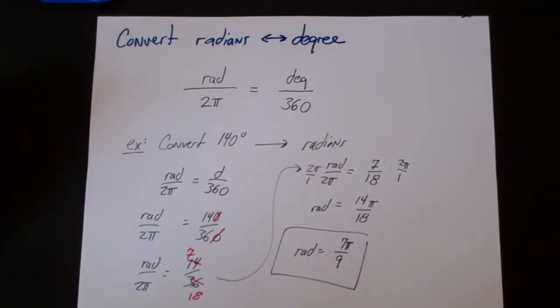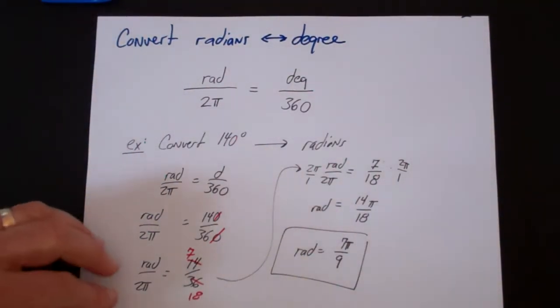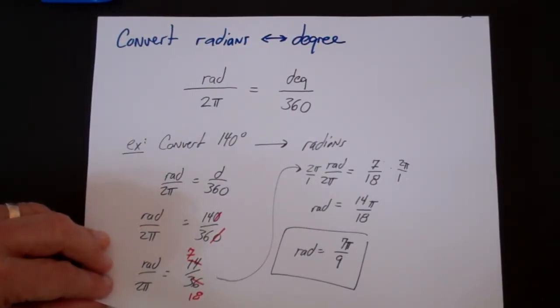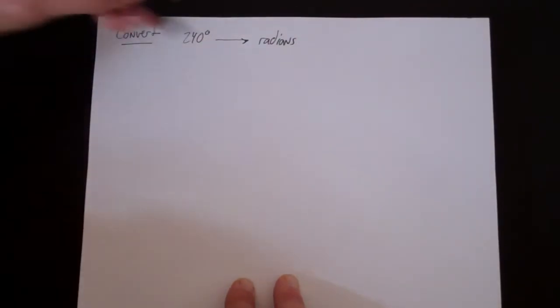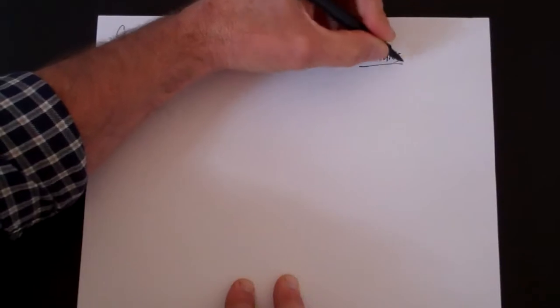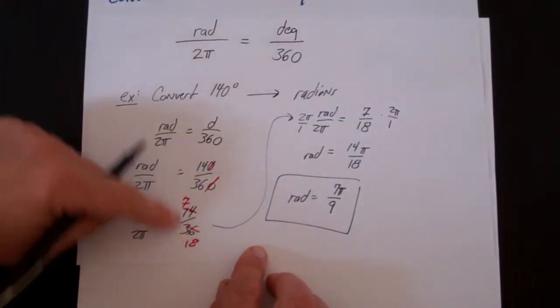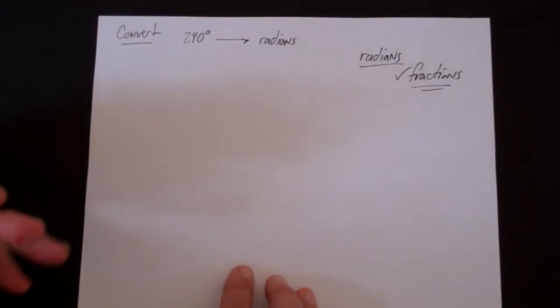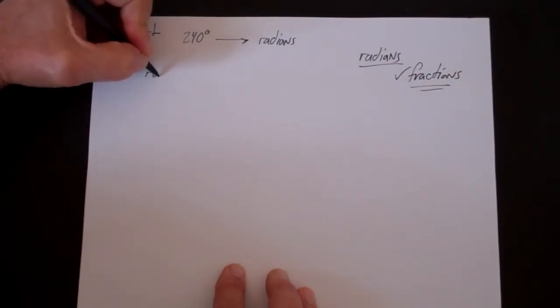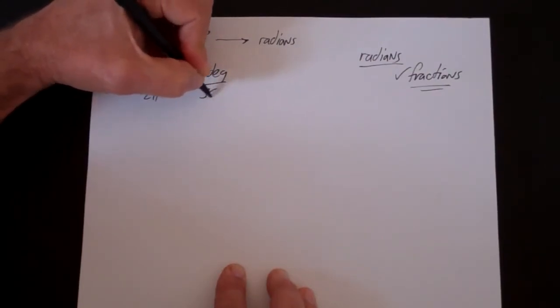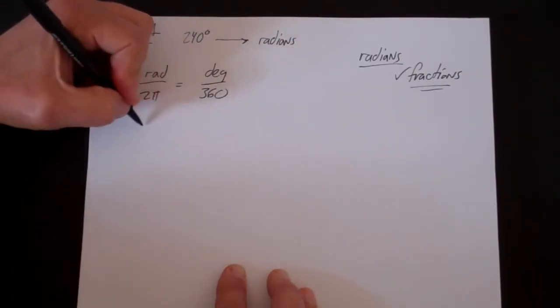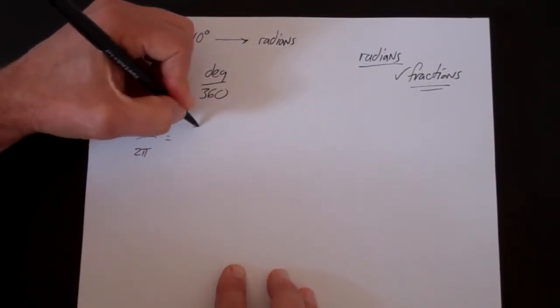And that's how you convert from degrees to radians. Let's do another example: convert 240 degrees to radians. You always want radians expressed as fractions if at all possible. Using the formula, radians over 2 pi equals degrees over 360, plug in 240 to get radians over 2 pi equals 240 over 360.